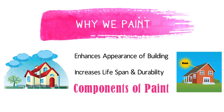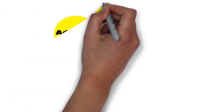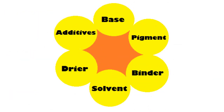Modern paints can have 10 or 20 components, each responsible for giving a specific quality to the paint. But basically, paint consists of 6 main components, and they are: Base, Pigment, Binder, Solvent, Dryer, and Additives. So let us discuss them one by one.